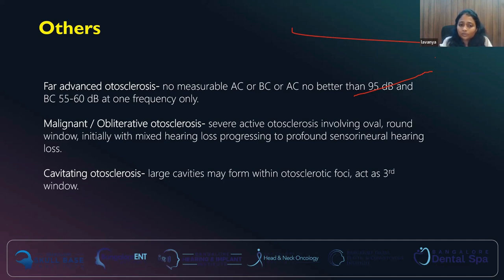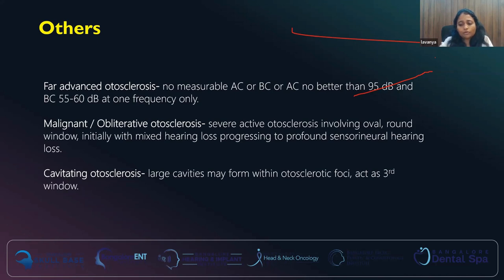Cavitating otosclerosis is where large cavities form within the foci of otosclerosis. If they include the endosteum of the scala tympani, they can have a third window effect. There are two important implications: even after successful stapes surgery, there can still be persistent air-bone conduction gap. And if the cavity space is communicating with the CSF space in the internal auditory canal, there can be a CSF gush. So it's important to know this so we'll be prepared when taking these patients up for surgery.